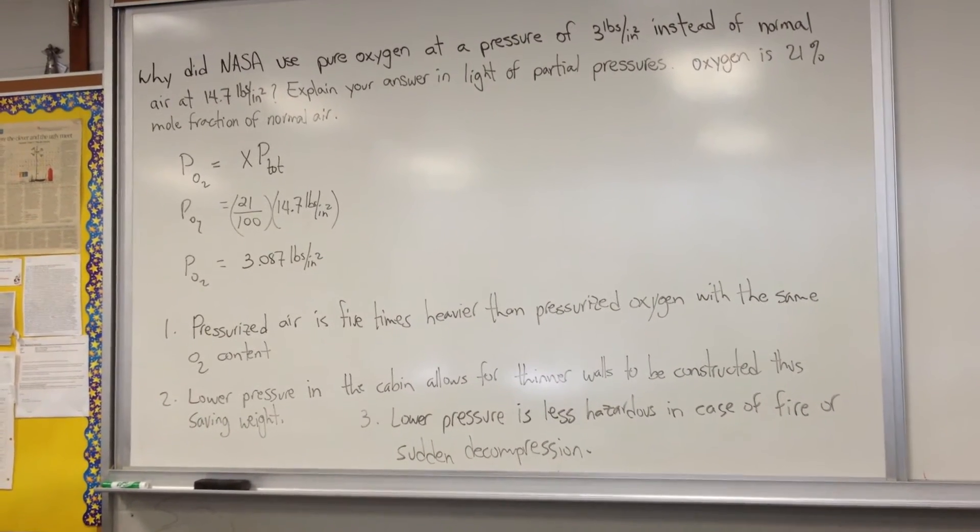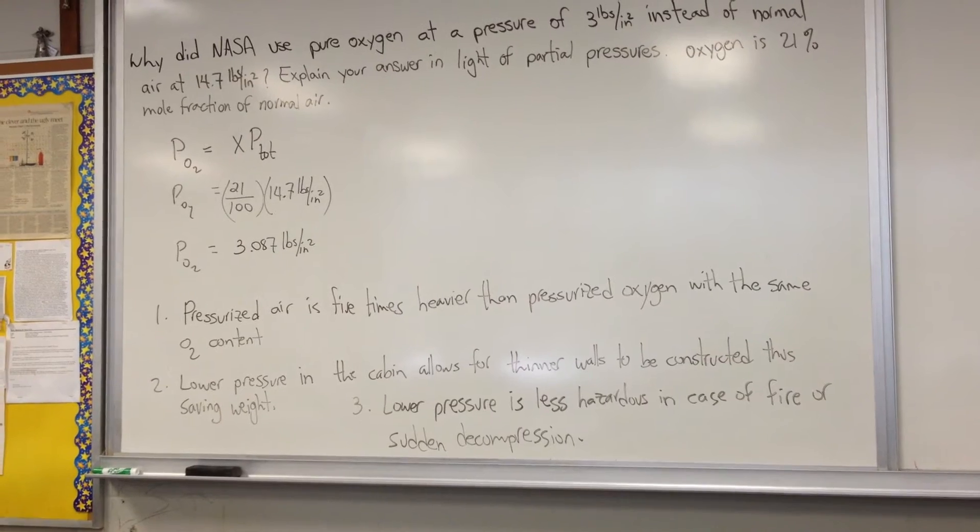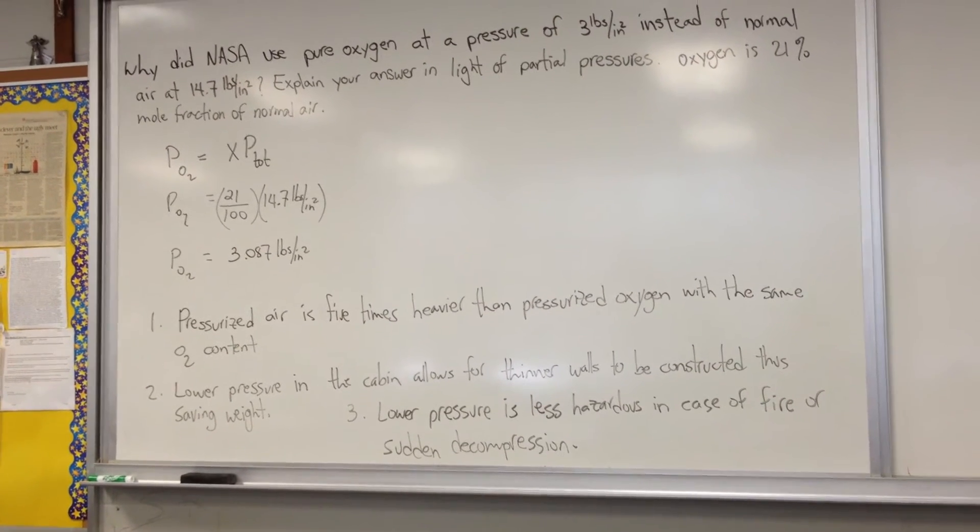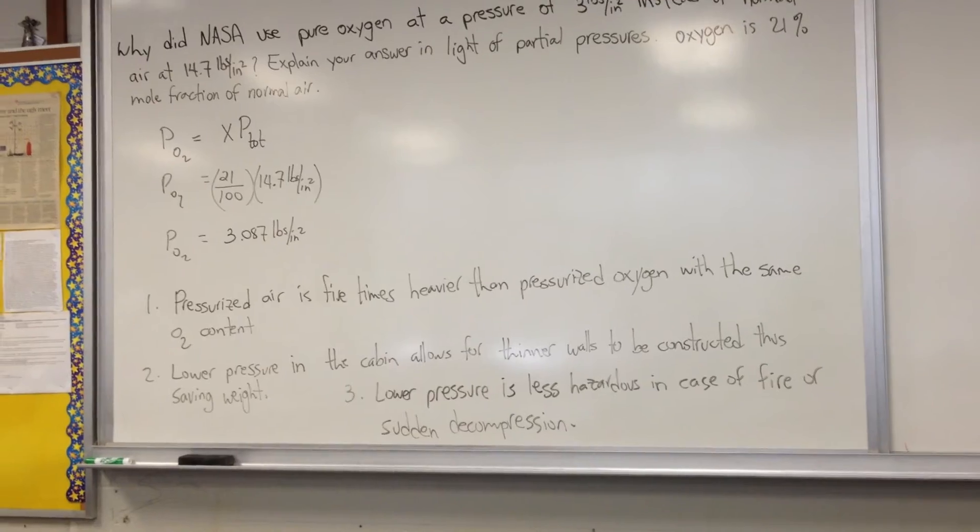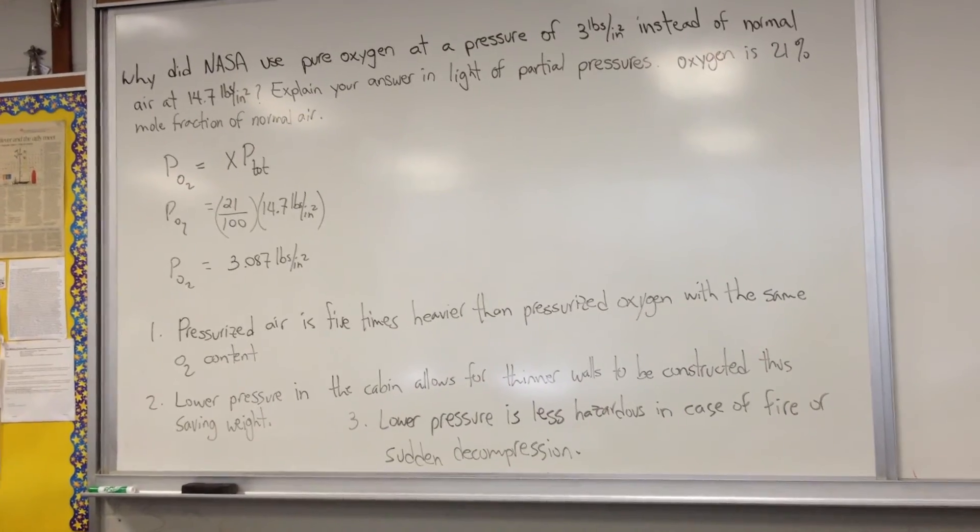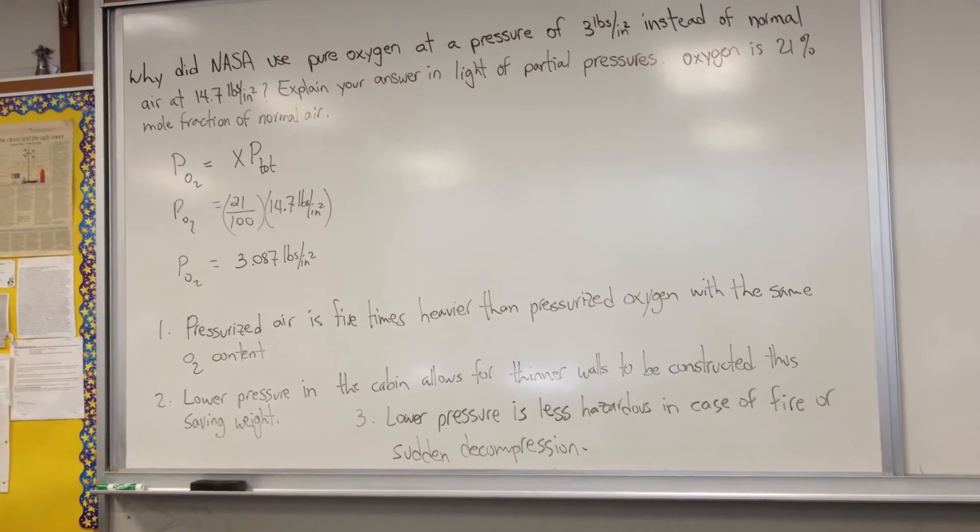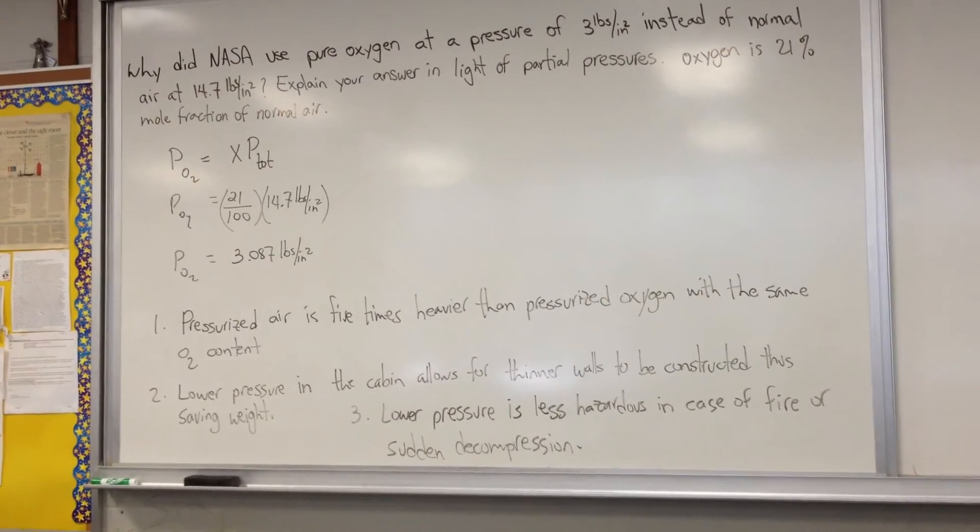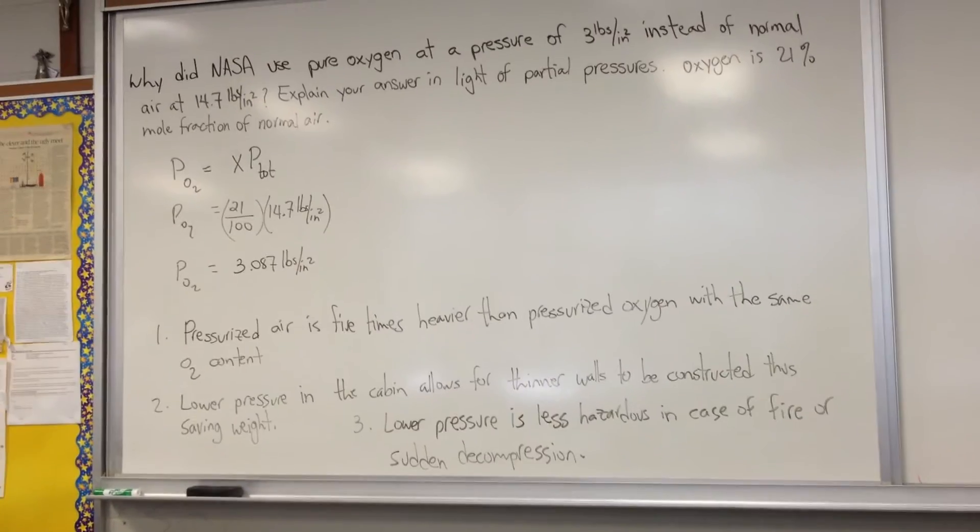Consequently there was a saving in the size of the rocket necessary to lift it off. As we can see from the 1969 blast-off of the Saturn V rocket, it was already a huge rocket despite all the weight-saving measures they used.